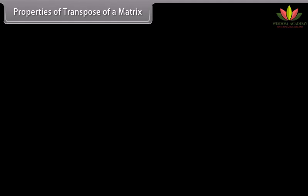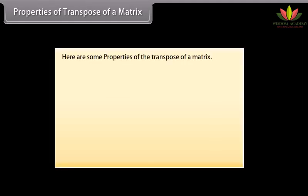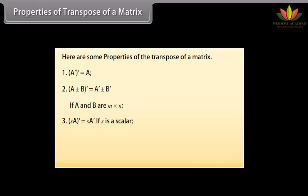Properties of transpose of a matrix: First, transpose of transpose of matrix A is equal to matrix A. Second, transpose of (A ± B) is equal to transpose of A ± transpose of B, if A and B are M×N. Third, transpose of (S × A) is equal to S × transpose of A, if S is a scalar. Fourth, transpose of (AB) is equal to transpose of B × transpose of A, if A is M×N and B is N×P.